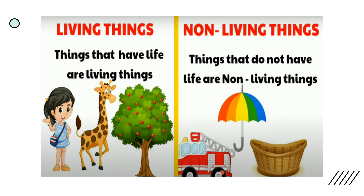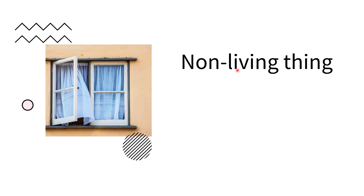Let's see some examples of living things and non-living things. Are you ready? Number one: window. Is this a living thing or a non-living thing? Non-living thing. Very good — the window is a non-living thing. They don't breathe air, they don't reproduce, they don't have life. That is why it is a non-living thing.